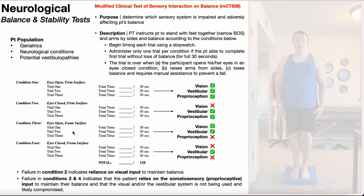Failure in conditions three and four — standing on a foam surface, eyes open or closed — indicates that the patient relies on somatosensory or proprioceptive input to maintain balance, and that the visual and/or vestibular system is not being used effectively and is likely compromised. Treatment depends on which system is compromised. For visual issues, conduct or refer for an eye exam — the patient may have uncorrected poor vision, diplopia, or double vision. If the vestibular system is compromised, force the patient to use vestibular information through targeted balance exercises. Ensure minimal distractions in the room, as this is not a cognitive dual task.